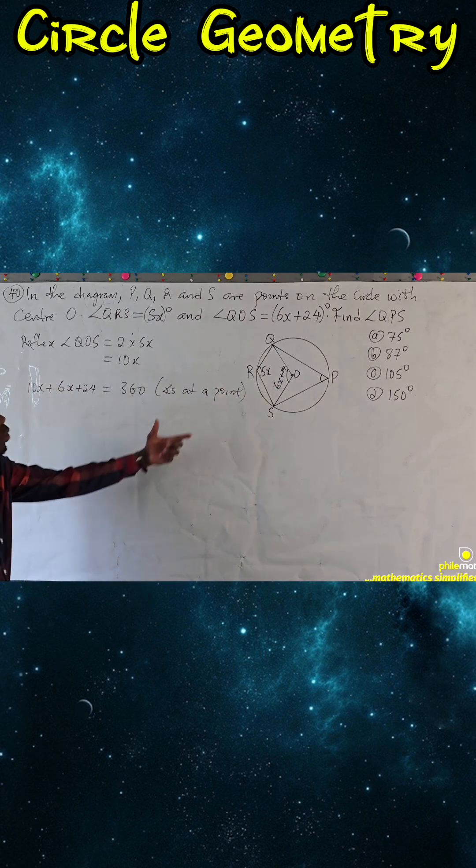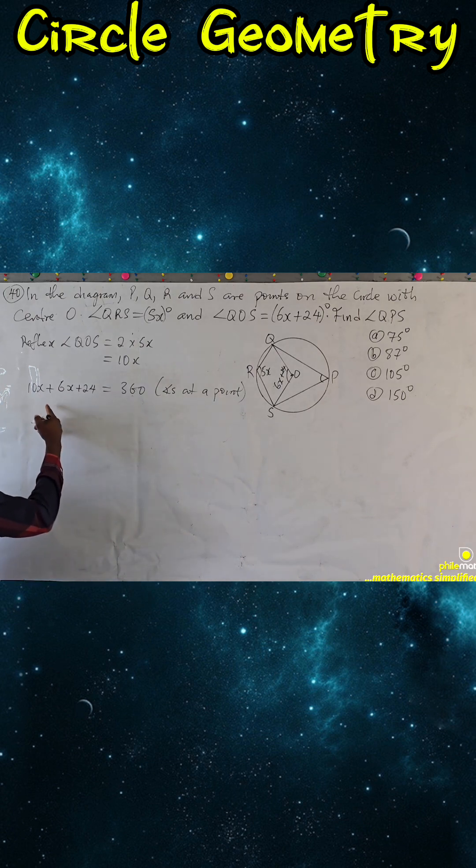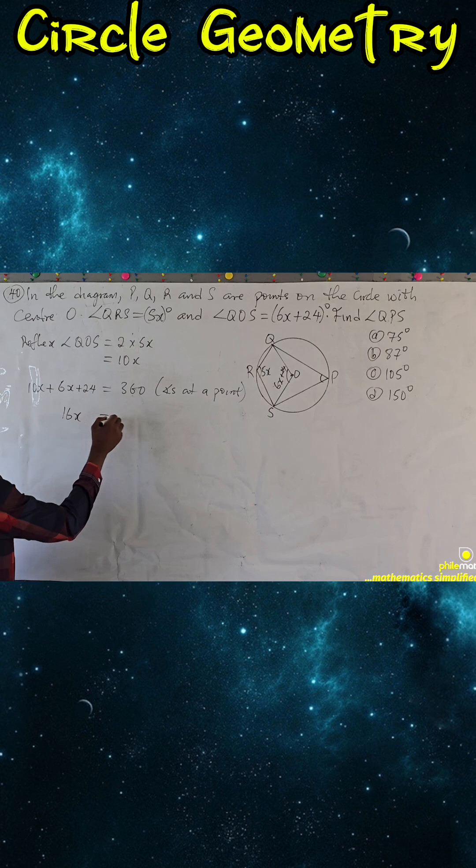It is theory you are meant to be writing this down, but just to make it clear to you what we are doing. So this will be 10x plus 6x is 16x. Subtract 24 from both sides will be 360 minus 24.